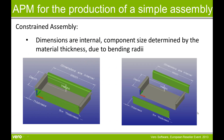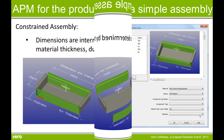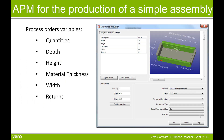We'll show you how APM can be used for the production of this simple assembly. It's a constrained assembly — all the dimensions are internal, and the component sizes are determined by the material thickness due to the bending radii on the sides and the returns. We'll create an order, and within that order the process order variables include the quantities, the depth of the assembly, its height, its material thickness, its width and the returns.